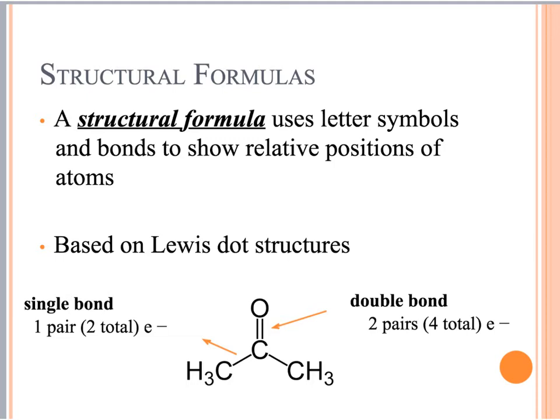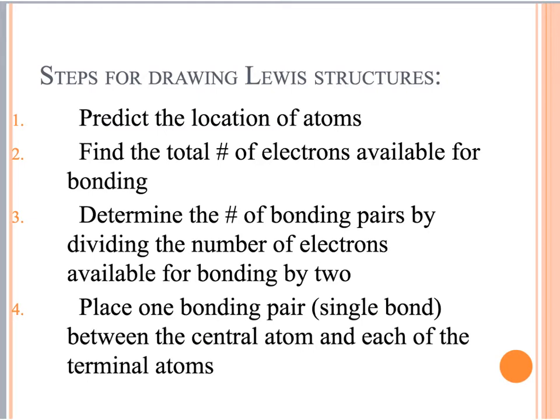We base these on Lewis dot structures — that's where you put a symbol of an element and then put eight or fewer valence electrons surrounding it. Some key features of the structural formula: if you have a single bond, which is one pair or two total electrons, you show that with a single line. If you have a double bond, which is two pairs or four total, you show two lines. And a triple bond would be three lines.